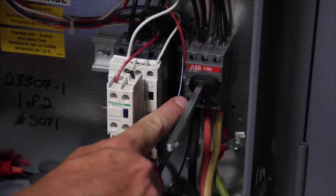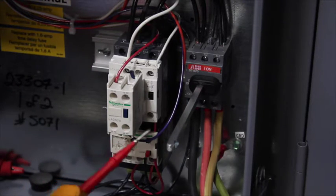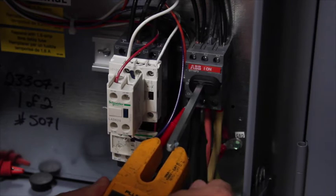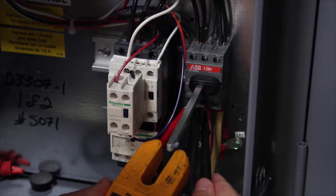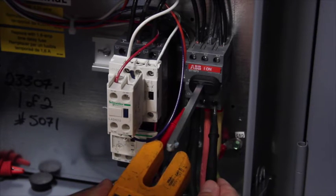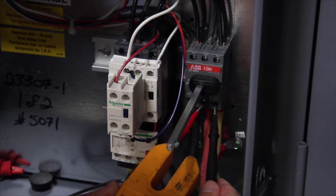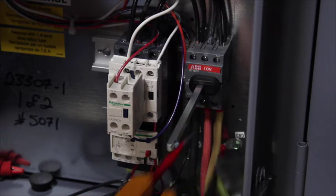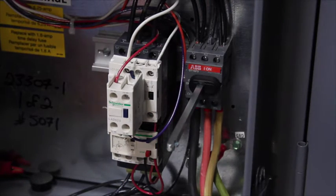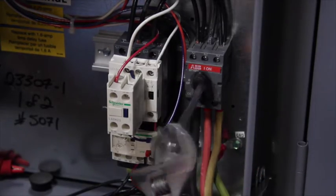Now verify the disconnect is in the off position. Using a voltmeter, check across all three legs of the supply power: L1L2, L1L3, L2L3. After you verify the voltage, turn the disconnect switch to the on position.